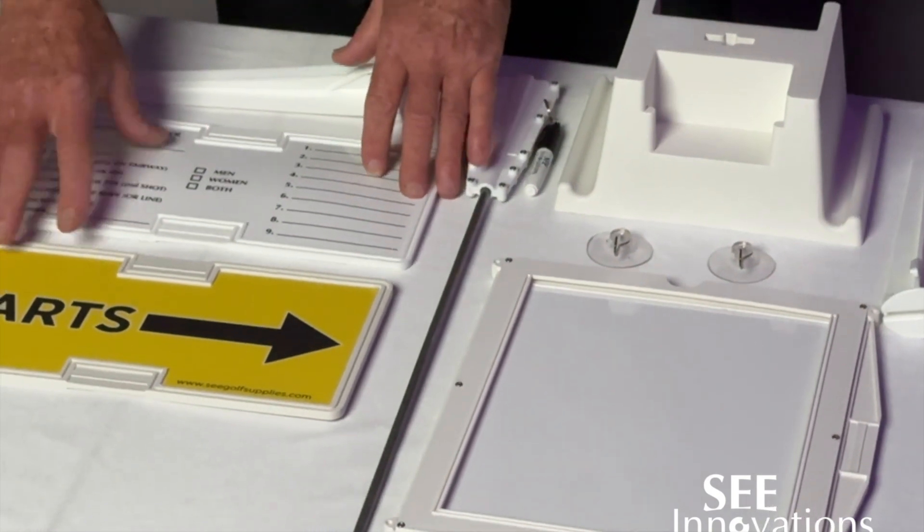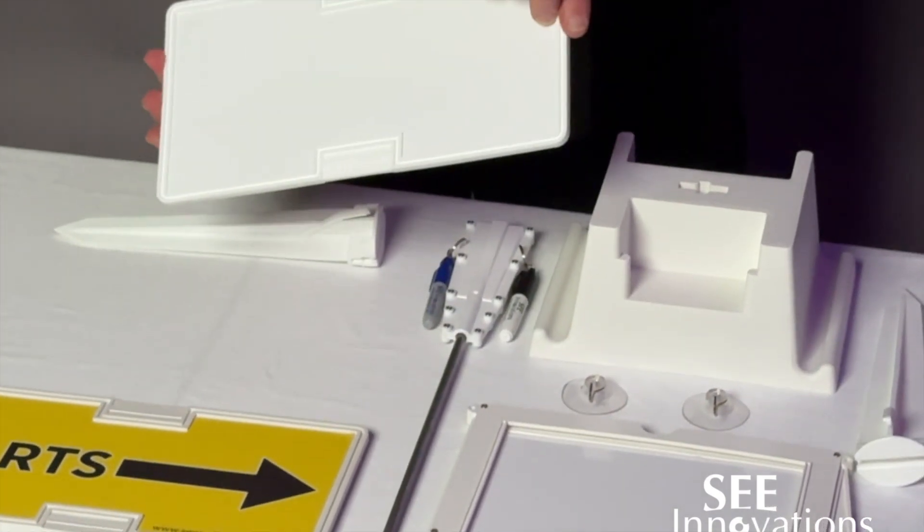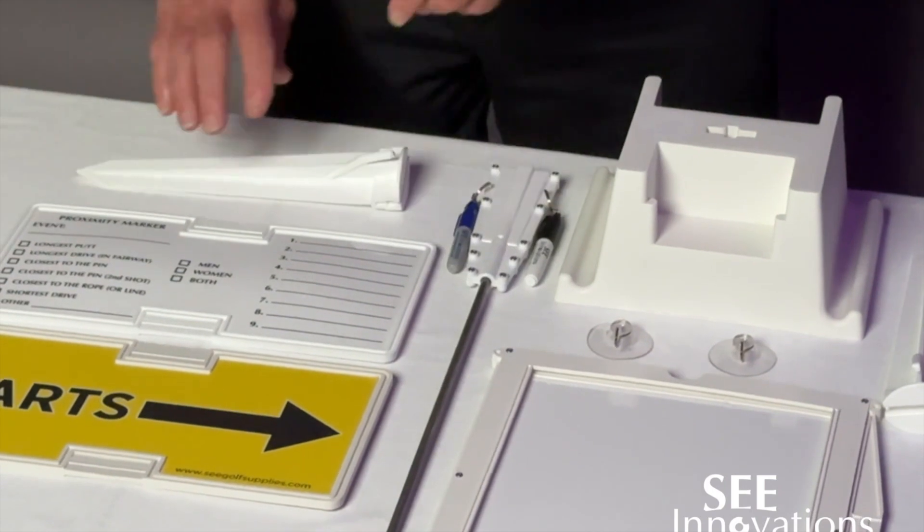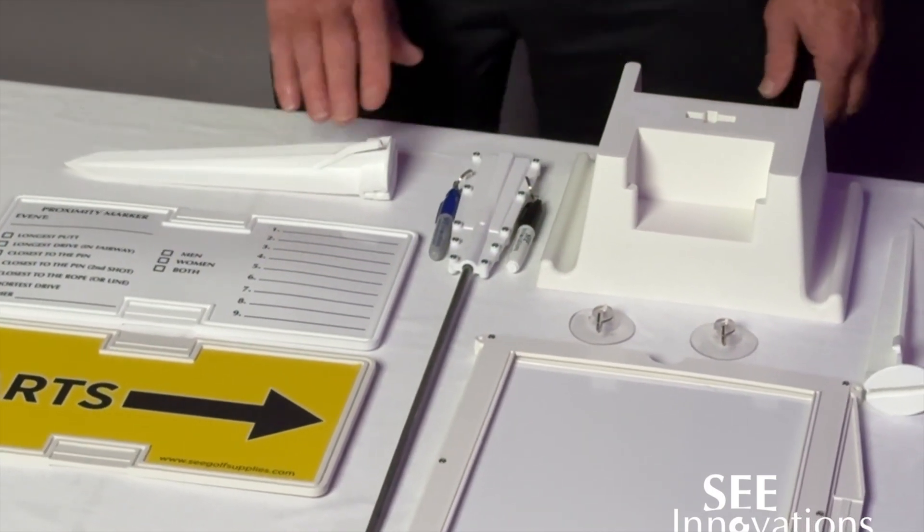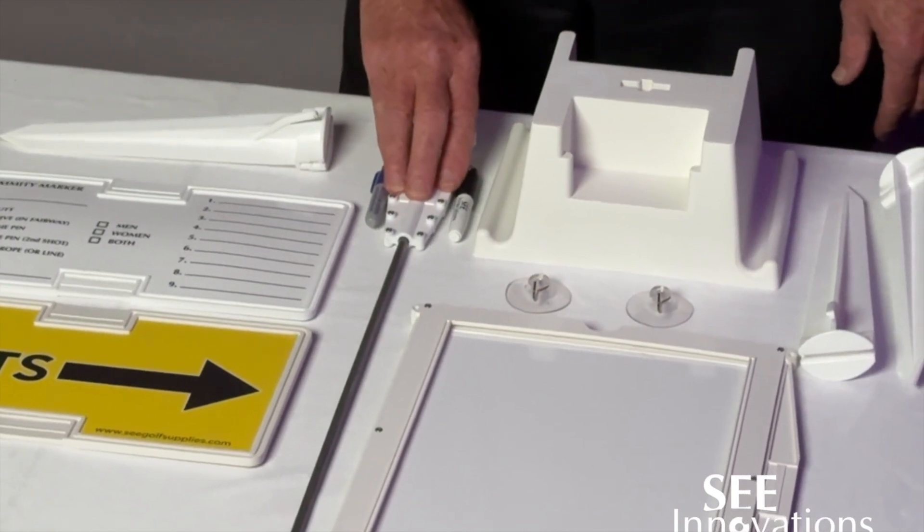You get two signs, one which is dry erase, you get the mounting stake with the rope clip, stake extension so you can use it on the green or on the fairway as a rope clip.